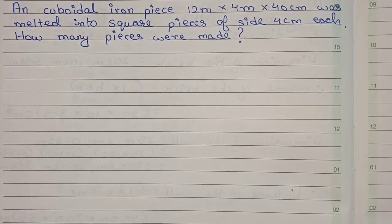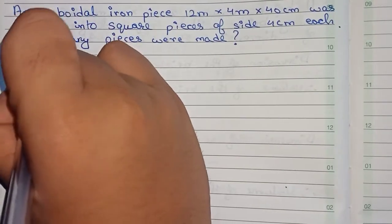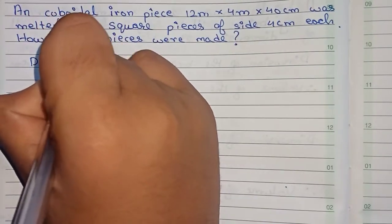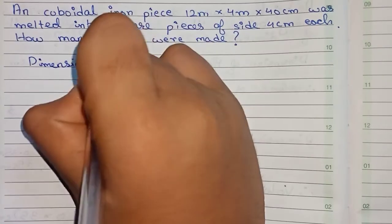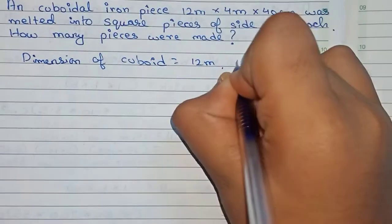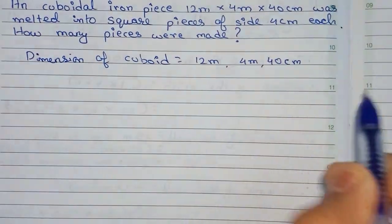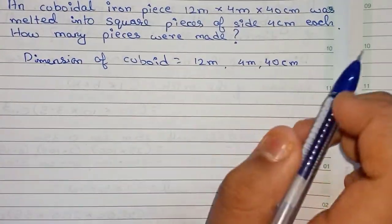Now I solve this. So first we write dimension of cuboid. It is equal to 12 meter, 4 meter, 40 centimeter. As we have two different types of units given, we have to convert them into single unit.